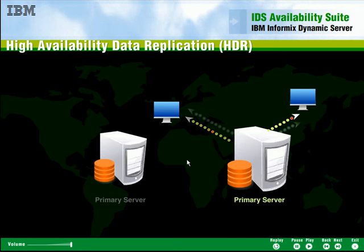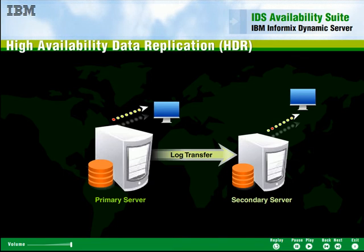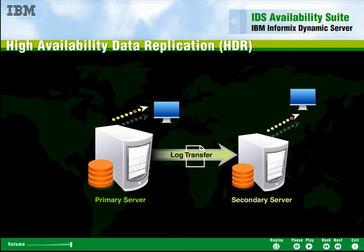The HDR secondary server can also be used to increase overall throughput by offloading reporting and other query activities from the primary.